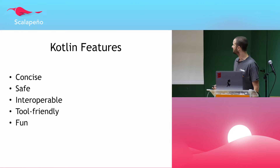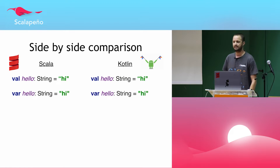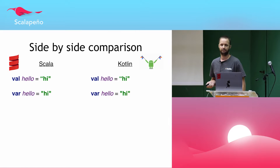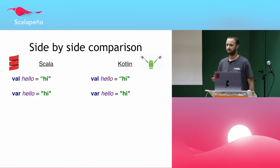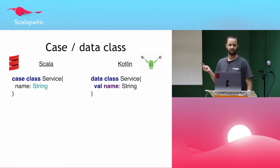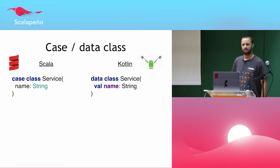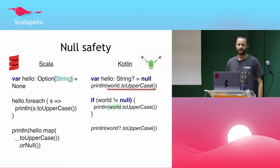Let's see how Kotlin looks in terms of syntax. First, variable declaration — it's pretty much exactly like Scala, you can see them side by side. We also have type inference both in Kotlin and in Scala. In the case of case classes, in Kotlin it's called a data class, but it's pretty much very similar.